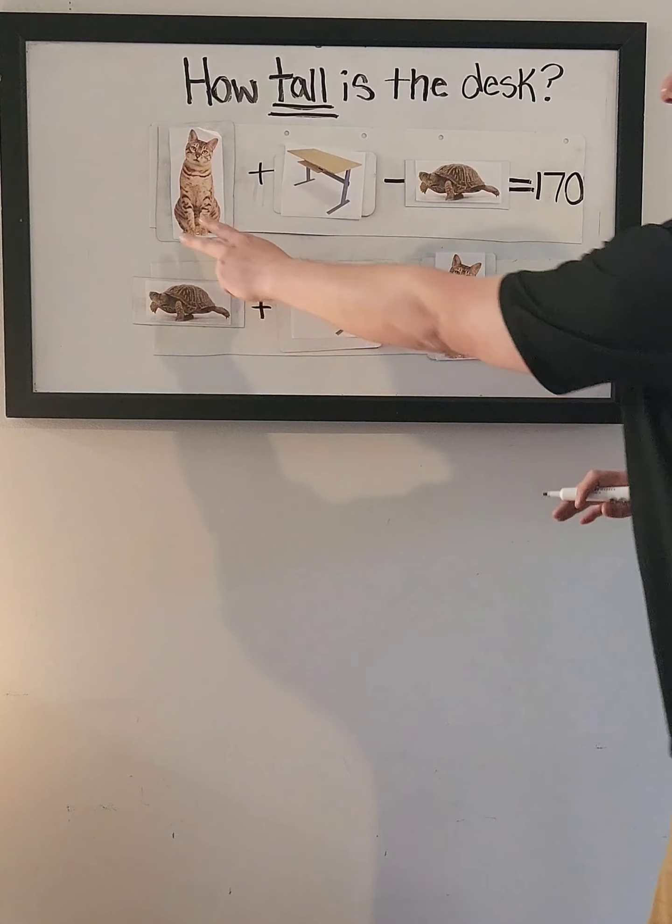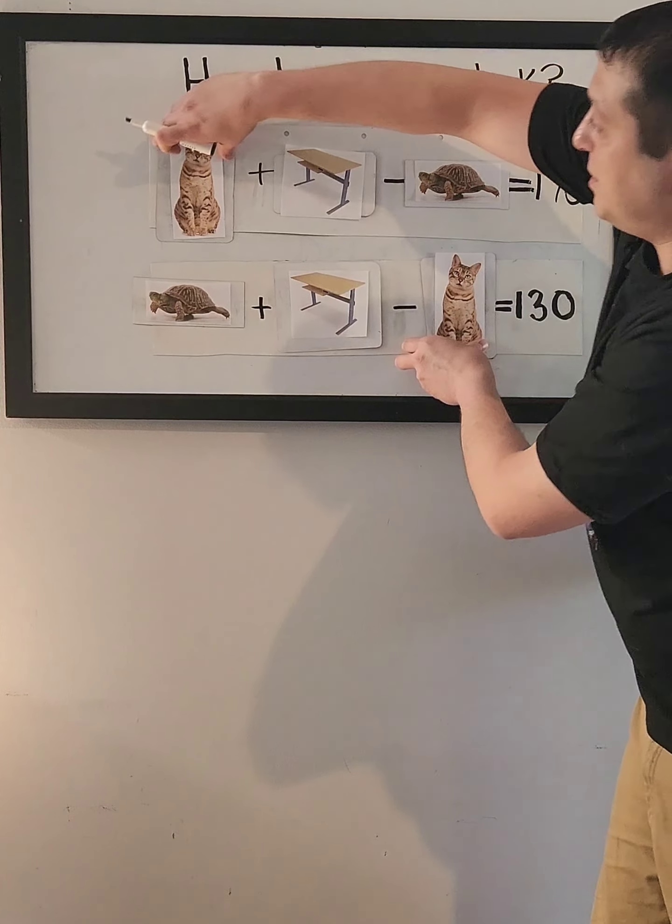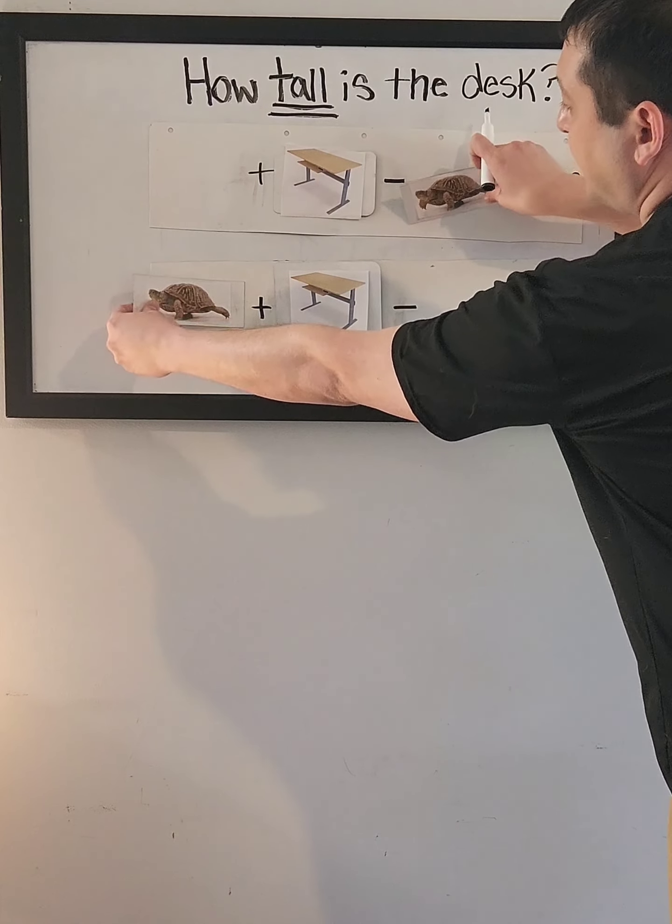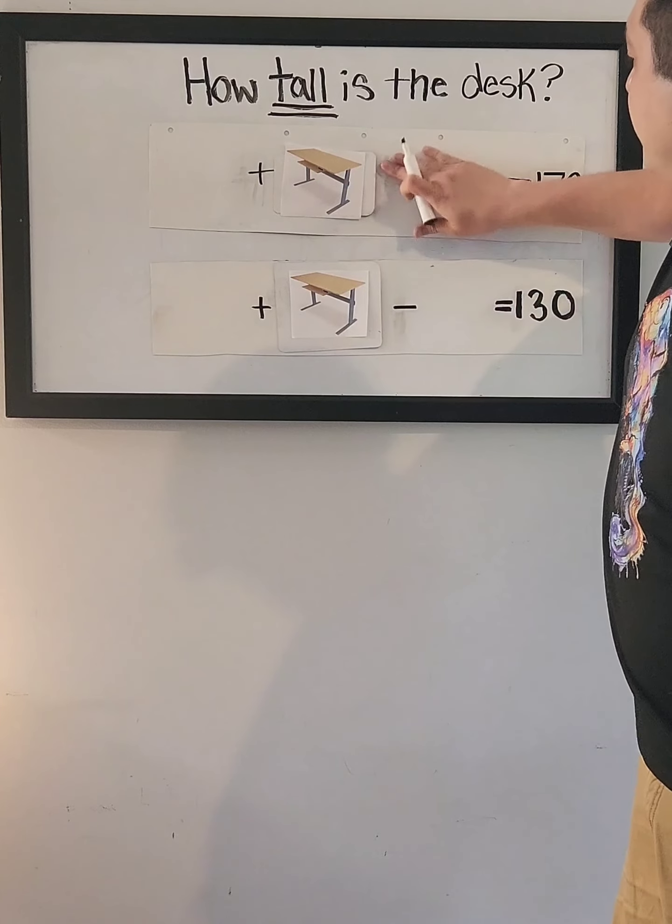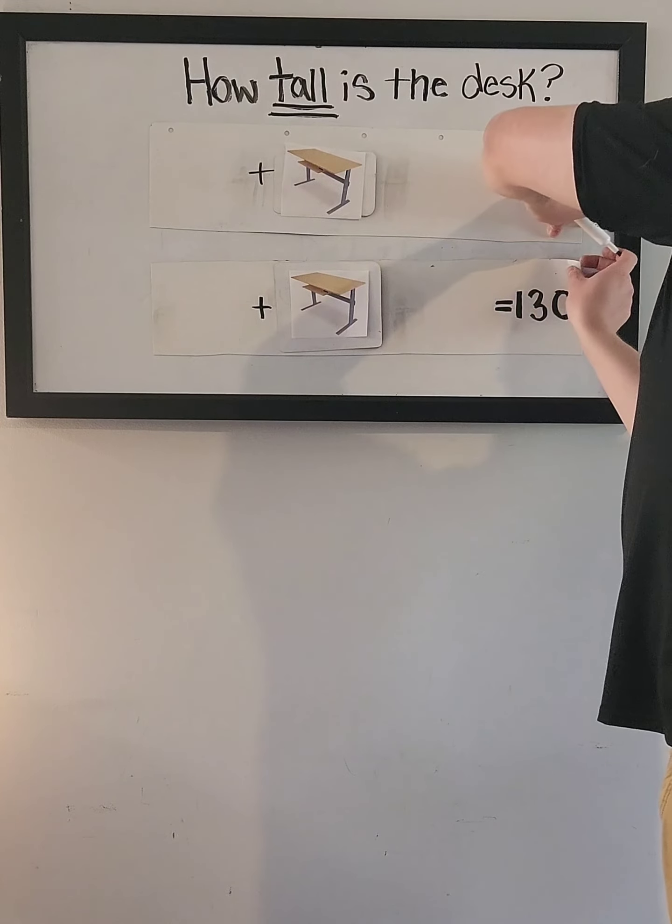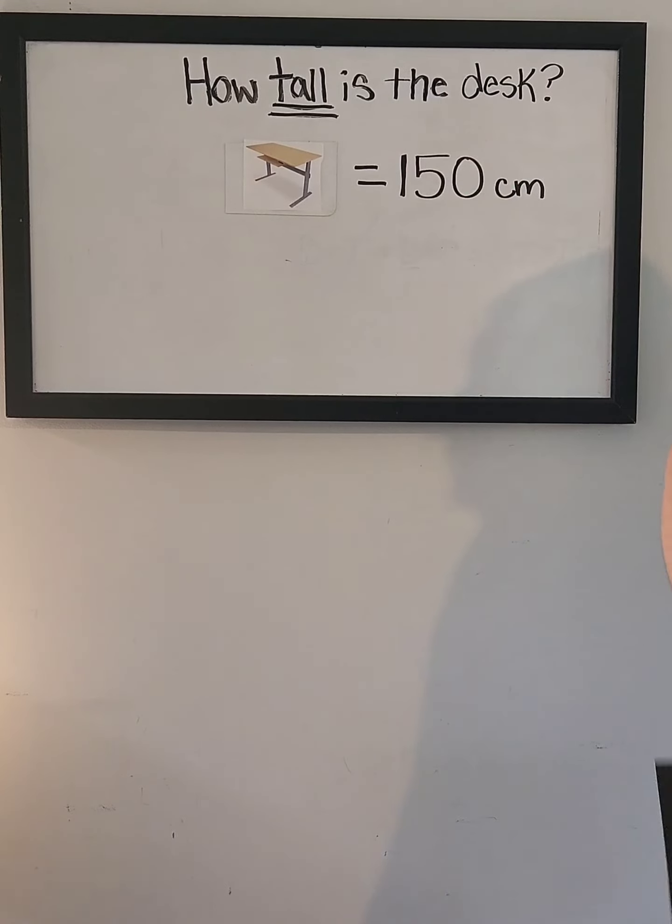When you add them together, you have cat and negative cat, which cancels out. Then you have turtle minus turtle, cancels out. So what you're left with here is two desks equals 300 or one desk equals 150.